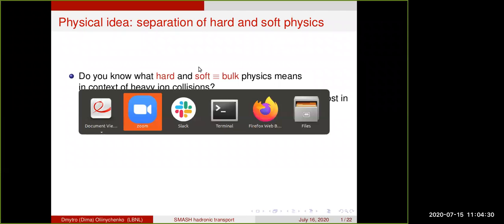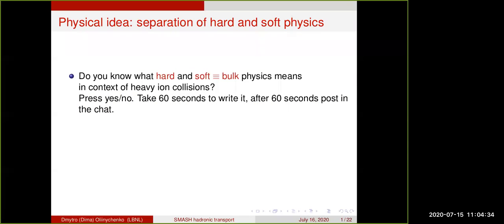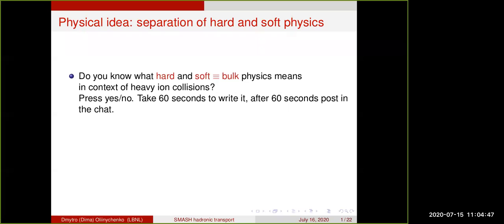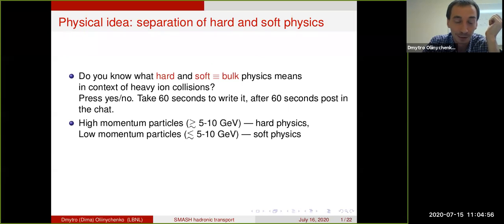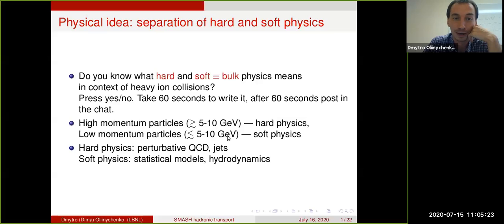To summarize, there are some responses on zoom. High pT is hard QCD, low pT is soft. Low pT particles emerge from hydrodynamics or other processes. Hard physics mostly from initial hard scattering. That's a decent answer. So high momentum particles—this momentum cut is not very clear where it is exactly, but above 10 GeV is definitely hard physics, below 3 GeV is definitely soft physics. Somewhere in between is a complicated region. When we're talking about hard physics, it's high momentum or jets. Soft physics is low momentum or bulk. Hard physics is perturbative QCD and jets. Soft physics is statistical models and hydrodynamics and low pT physics.